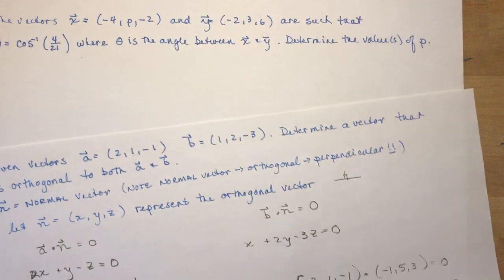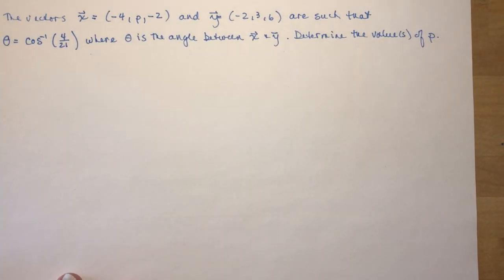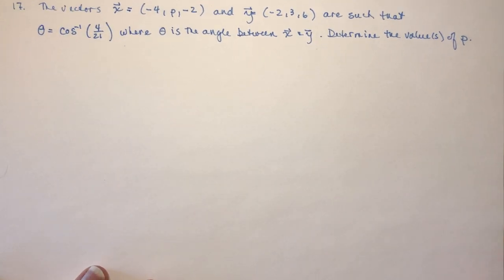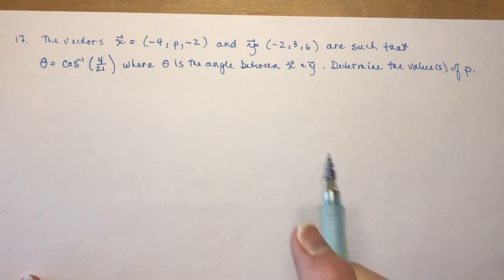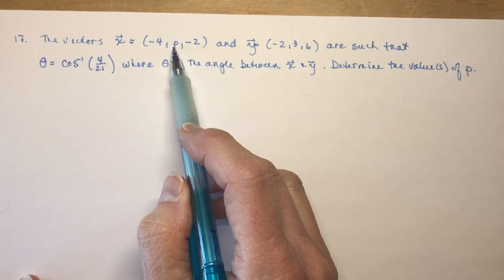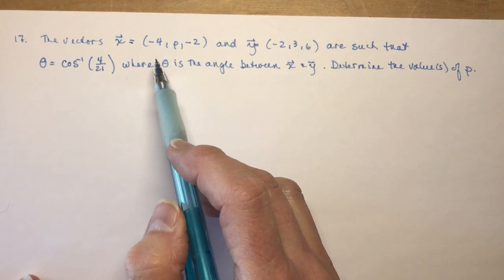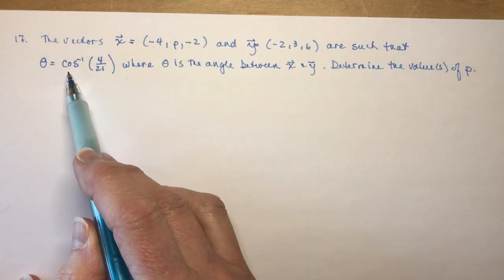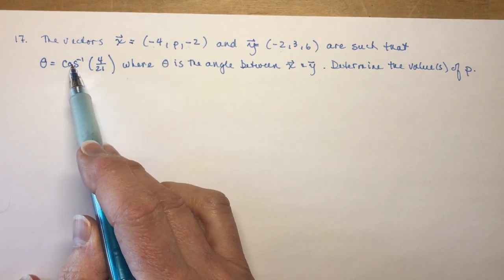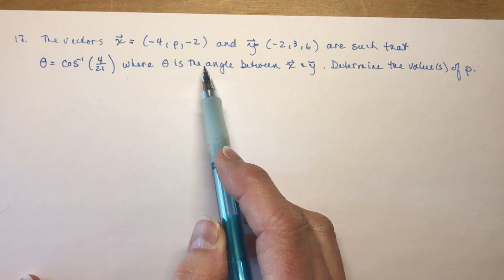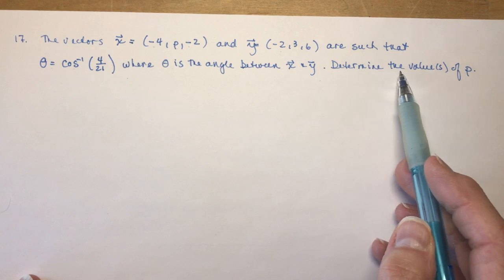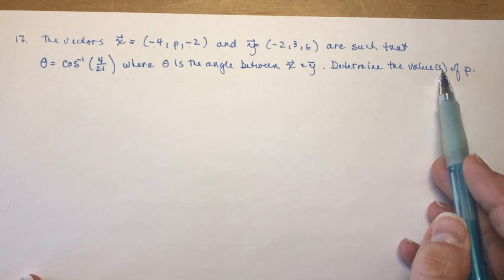Okay, the last thing I want to do is question 17, which is one of your homework questions that you may have been given. A little bit tricky, and it says that these vectors, it's always the ones that have to have you solve for a variable, right? Minus 4p minus 2, and minus 2, 3, 6 are such that cos negative 1 of 4 over 21, where theta is the angle between vector x and vector y, determine the values of P. So if they give you a little hint here, there's going to be more than one solution.